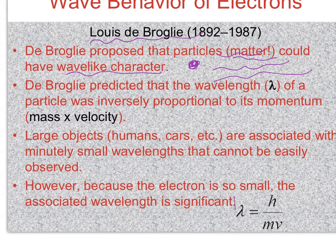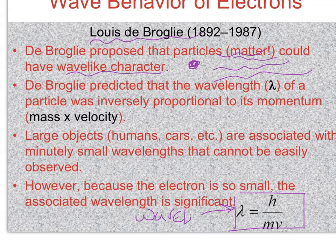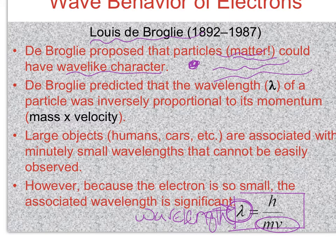He actually proposed a mathematical equation to describe that wave-like behavior. All I want you to understand is that the wavelength - this lambda sign is wavelength - associated with matter is inversely proportional to the mass or size of that piece of matter. If you're talking about something very big like a human being or a car, the wavelength associated with it would be very small. On the other hand, if you're talking about something with a very small mass like an electron, the wavelength associated with it would be large enough.